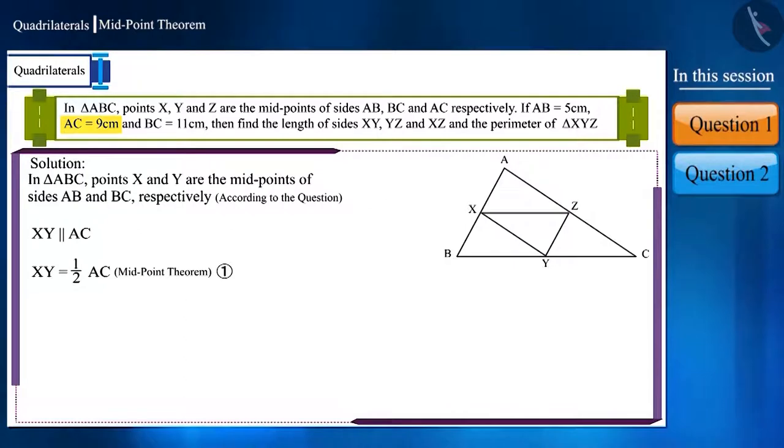We are given the measurement of AC as 9cm. Here, we can find the measurement of XY by substituting the value of AC. We get the value of XY as 4.5cm.